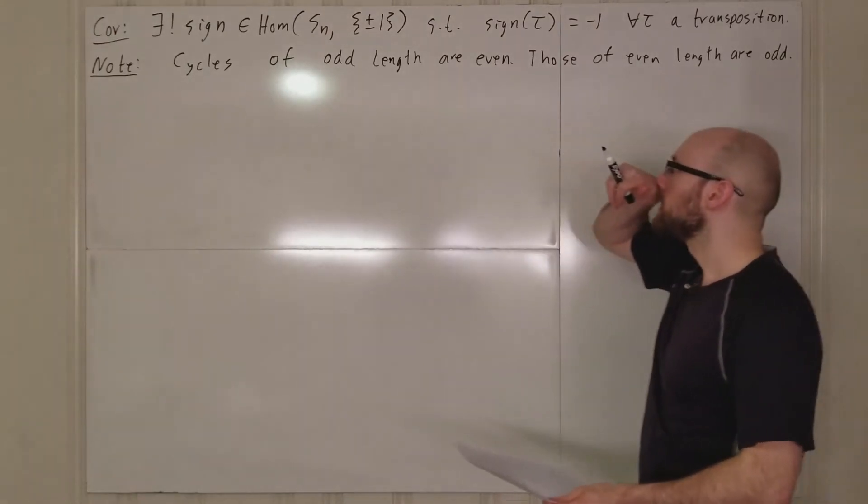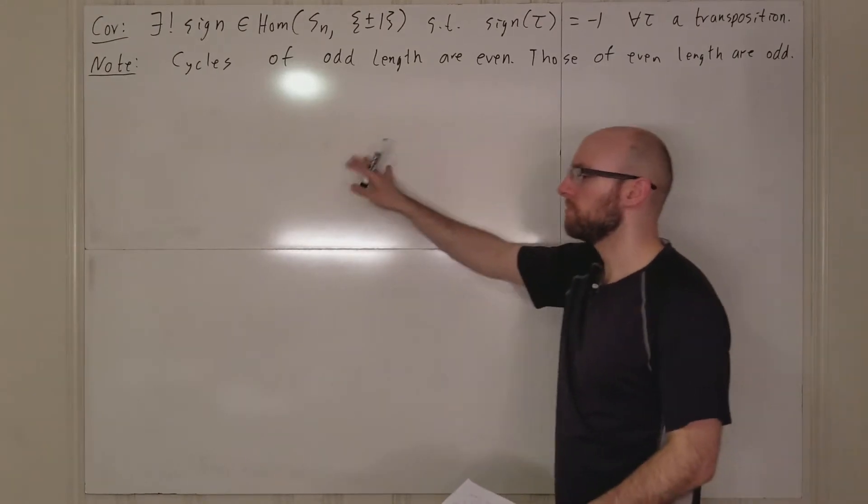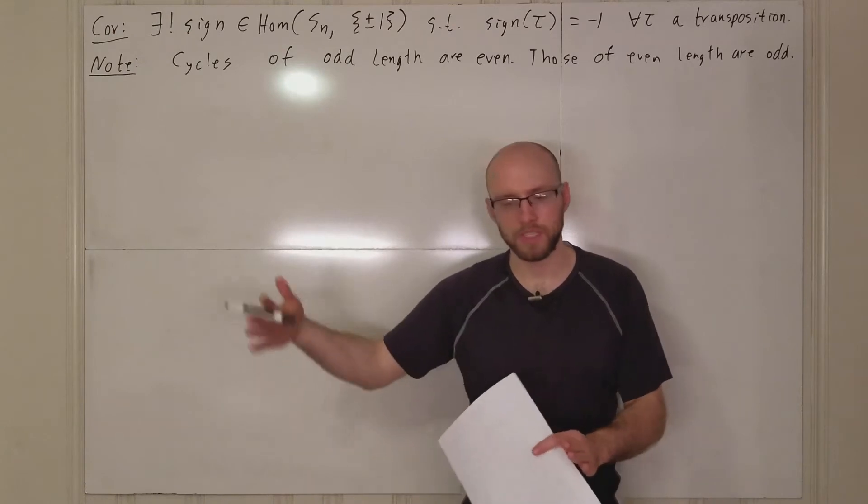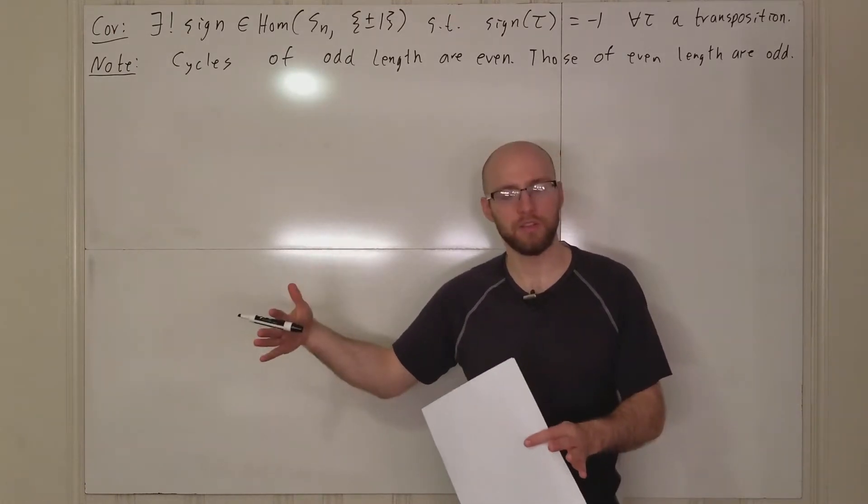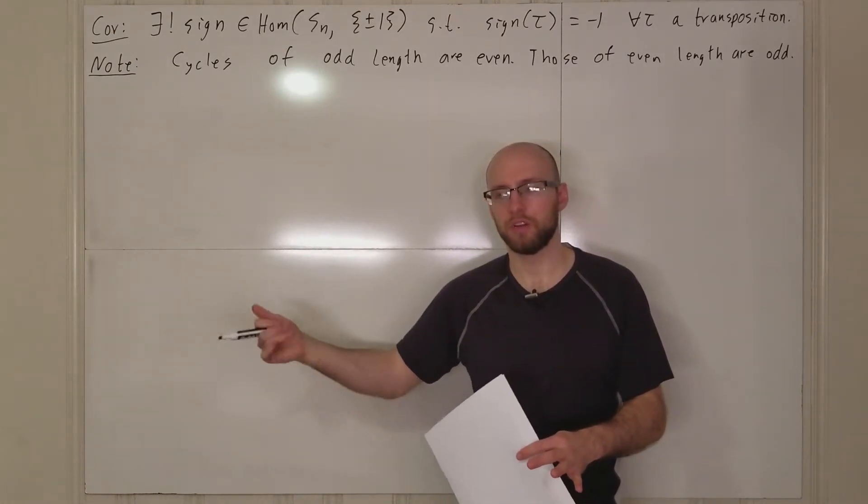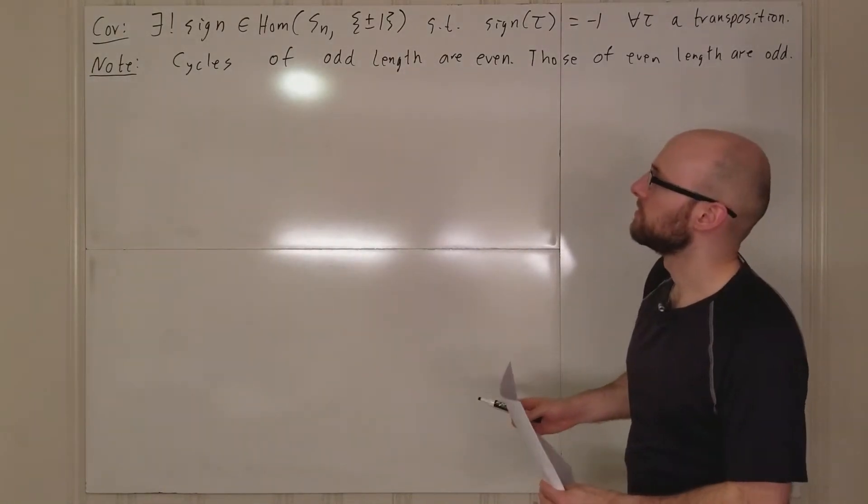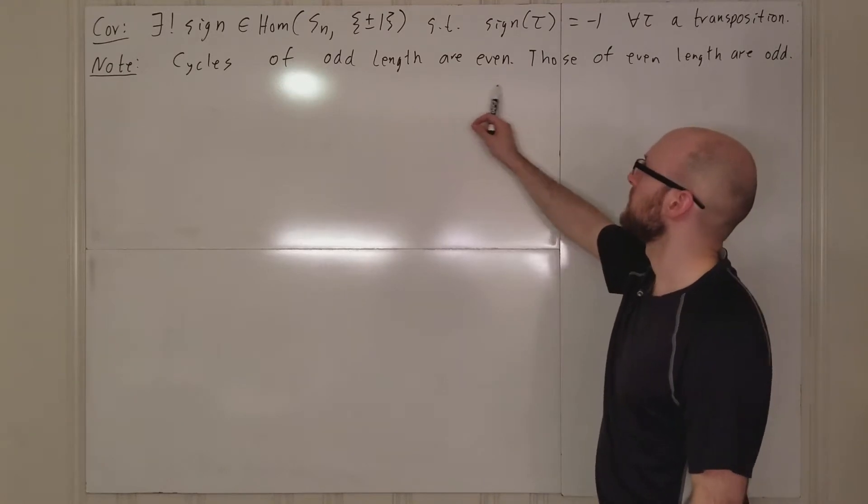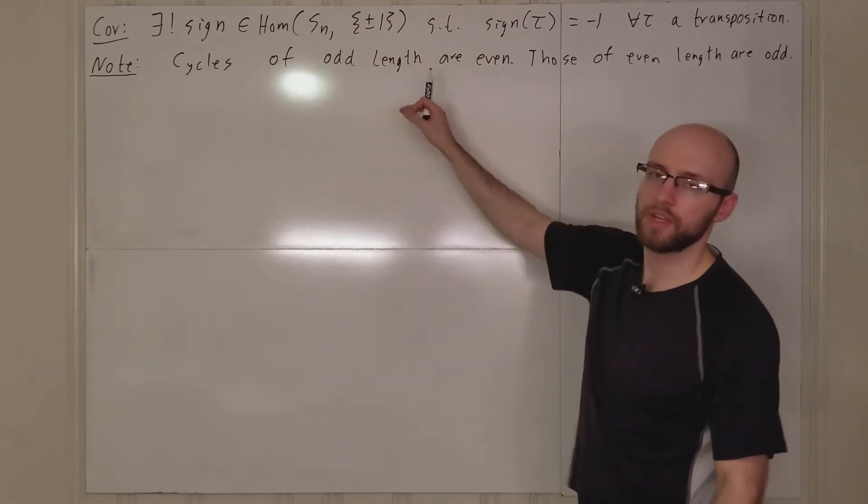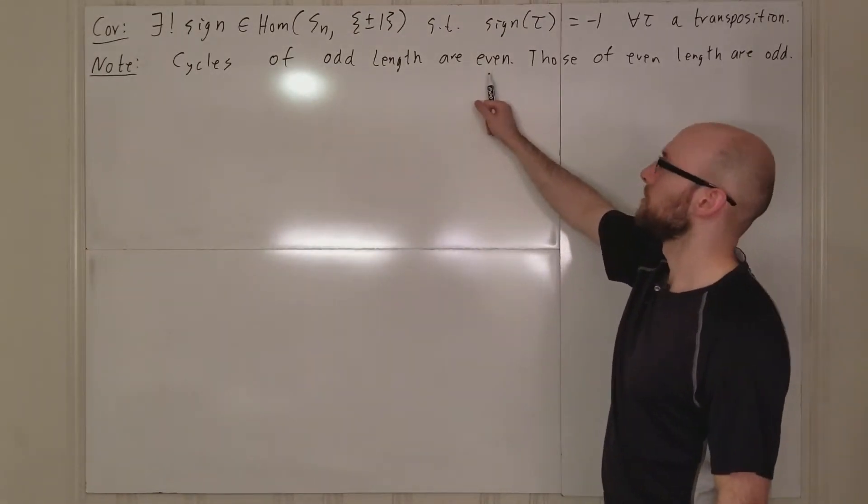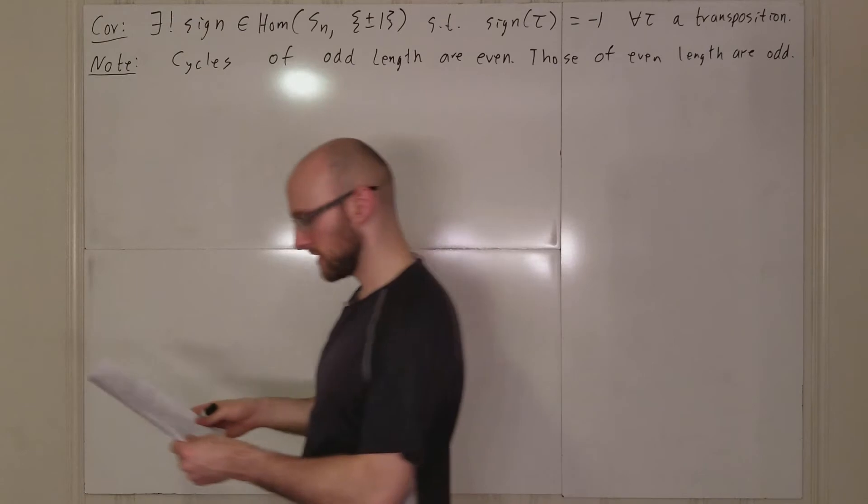One way to help remember this is, if you remember the number of, the way we defined n was we took the number of indices in an r cycle, which is r. So we took r, and then we subtracted one. And so that's why you get this discrepancy between the number of indices in a permutation and the parity.